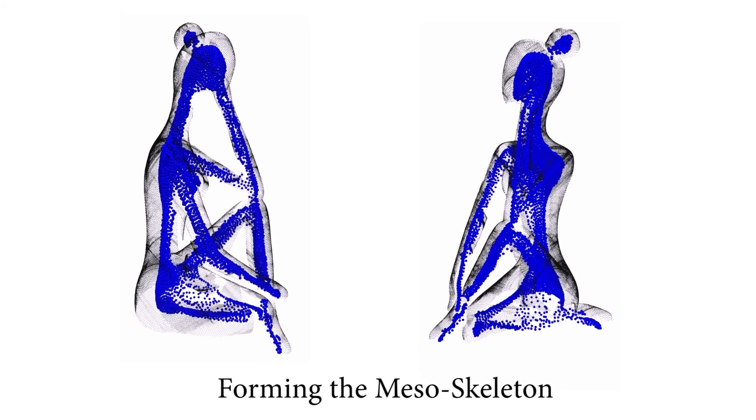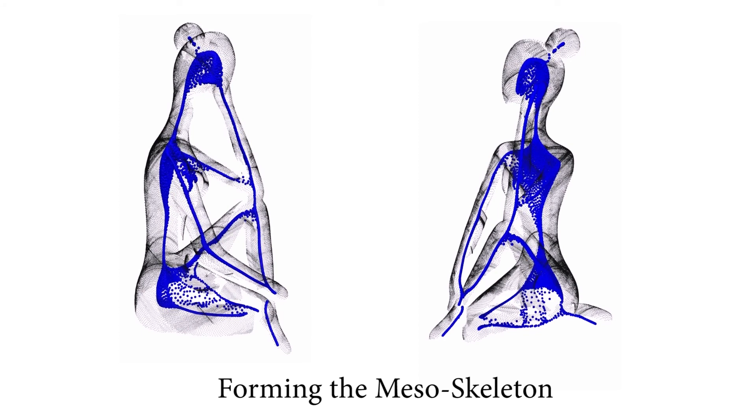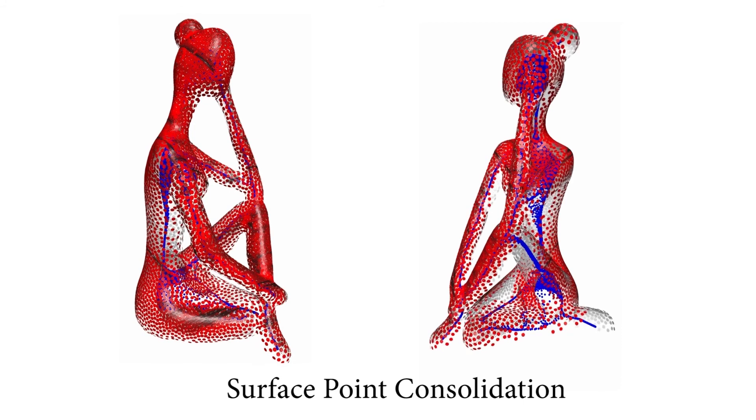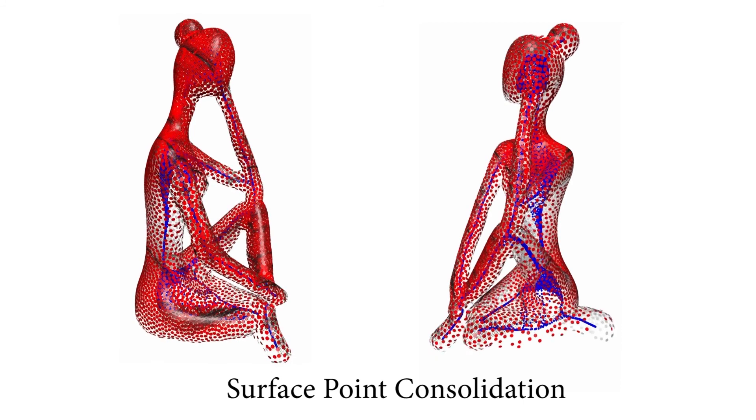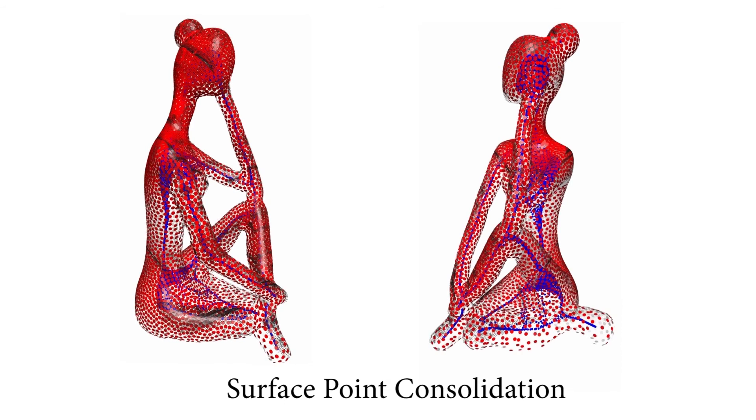We further consolidate the anchor points to form the mesoskeleton using anisotropic neighborhoods. Finally, the mesoskeleton provides the non-local information that guides surface point consolidation, and it allows us to complete large missing areas.